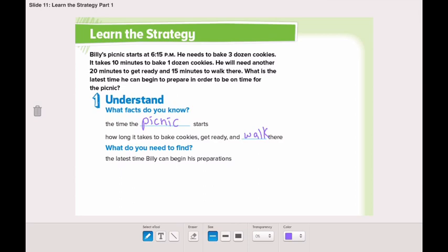What is the starting time? 6:15 p.m. How long does it take to bake the cookies? 10 minutes for 1 dozen, and he needs to bake 3 dozens. Now, how much time does it take him to get ready? 20 minutes. And how much time to walk there? 15 minutes.